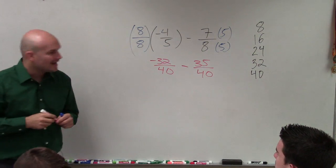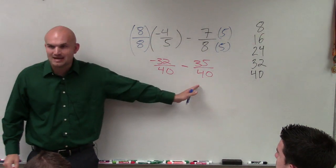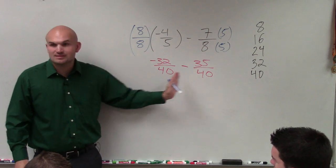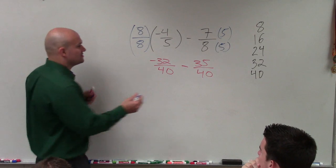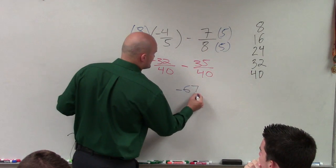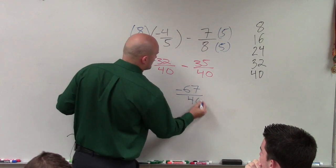Now I can subtract them. So negative 32 minus 35 is going to be negative 67 over 40.